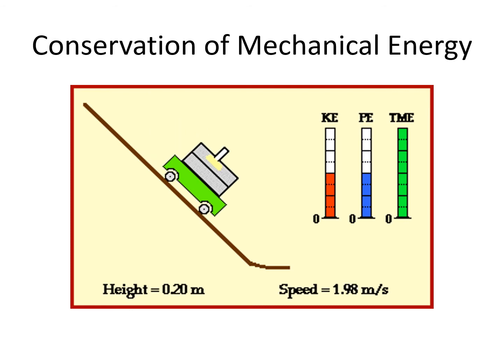Observe the dynamic cart as it moves down the inclined plane. Observe the value of the kinetic energy, the potential energy, and the total mechanical energy as the dynamic cart moves from the highest point to the lowest point of the inclined plane. At the highest point, the kinetic energy is zero and the potential energy is maximum, but the total mechanical energy is still maximum. At the lowest point on the ramp, the KE is maximum and the PE is zero, but still the total mechanical energy is constant. And observe the speed of the dynamic cart as it moves down the inclined plane. From zero, it has an increasing speed.